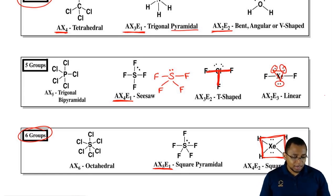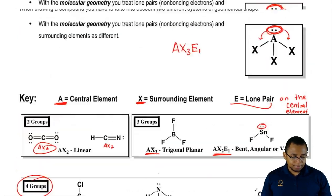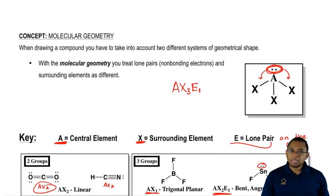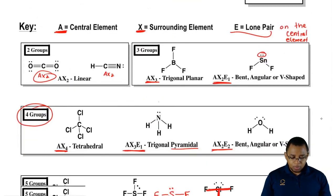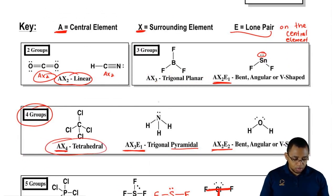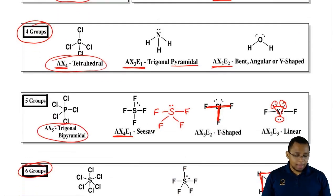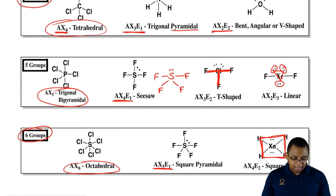There's more memorizing here than with electronic geometry, but if you can memorize this entire page, it will be just like memorizing electronic geometry because we know electronic geometry: AX2 is linear, AX3 is trigonal planar, AX4 is tetrahedral, AX5 is trigonal bipyramidal, and AX6 is octahedral.